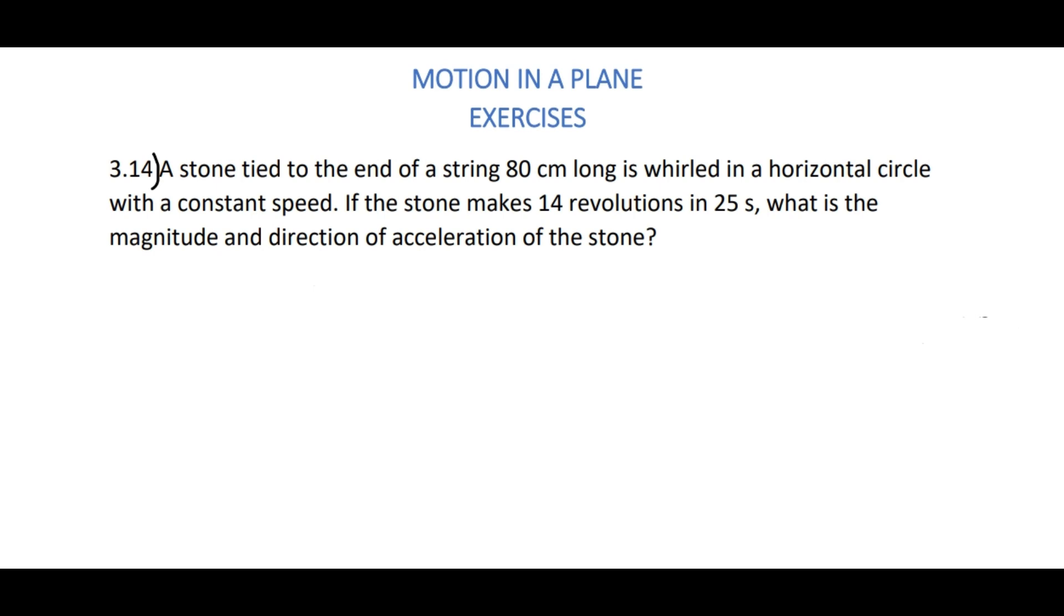A stone tied to the end of a string 80 cm long is whirled in a horizontal circle with a constant speed. If the stone makes 14 revolutions in 25 seconds, what is the magnitude and direction of acceleration of the stone?